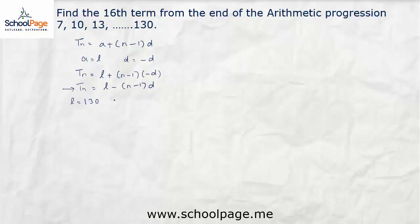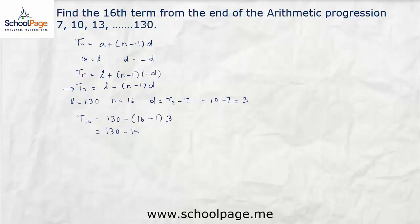Here l is given as 130, n is 16 (since we want the 16th term from the end), and d equals t2 minus t1 equals 10 minus 7 equals 3. Substituting into the formula: t16 equals 130 minus (16 minus 1) into 3, which is 130 minus 15 into 3, equals 130 minus 45, which equals 85. So the 16th term from the end is 85.